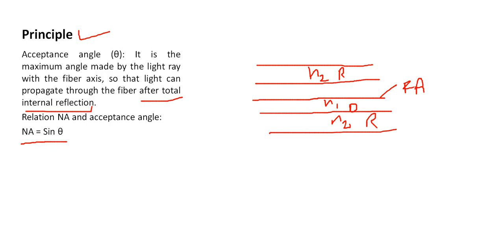Light will pass from the outside medium. It makes the maximum angle with the fiber axis. The light ray is incident from the outside medium, and if the angle is more than the critical angle, it will be totally internally reflected.